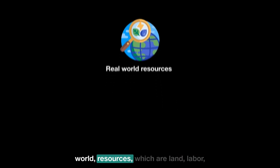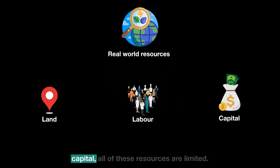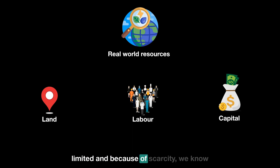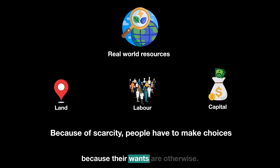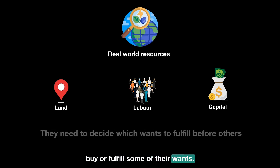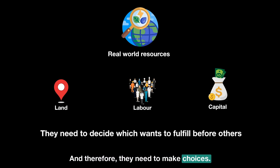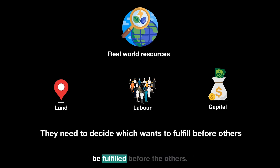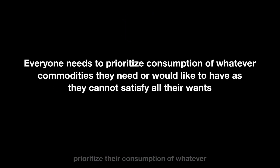In the real world, resources — which are land, labor, and capital — are all limited. Because of scarcity, people have to make choices, as their wants cannot otherwise be fulfilled. With limited resources, they can only fulfill some of their wants, so they need to make choices. The wants they prefer the most will be fulfilled before the others.